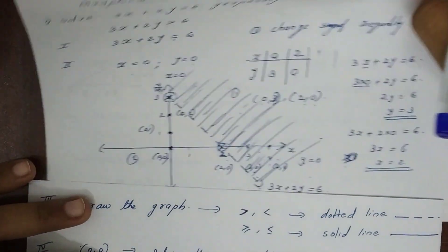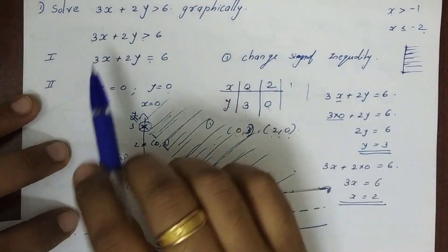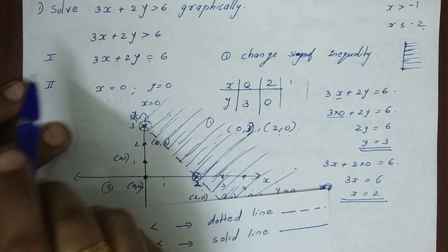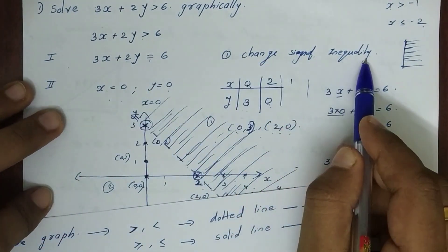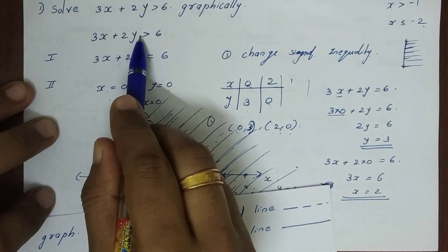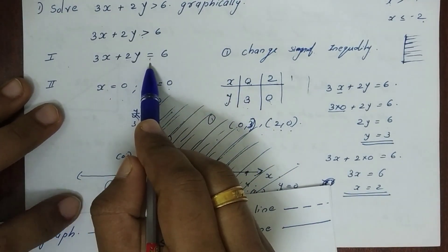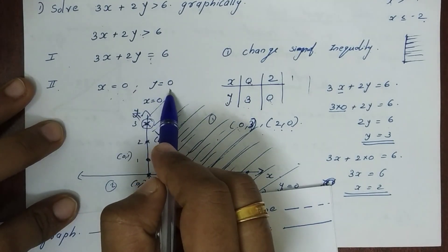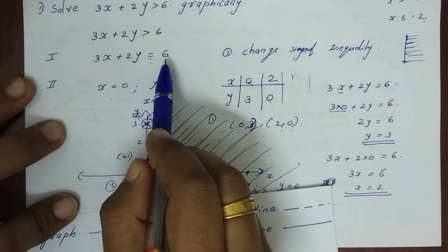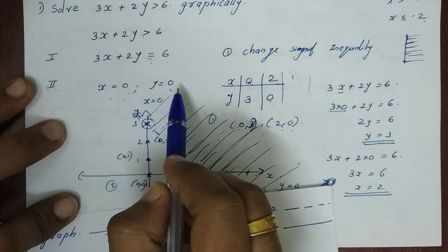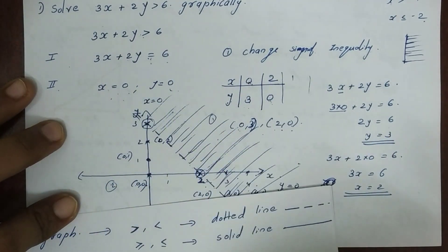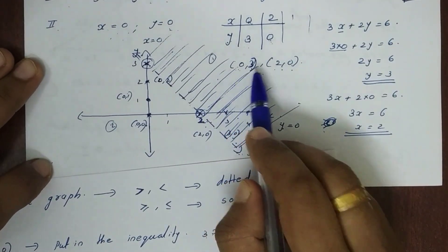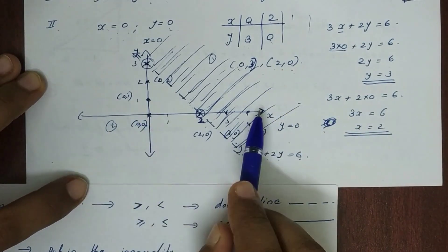To recap: the inequality is 3x plus 2y greater than 6. Step 1 is to change the inequality sign to an equal sign. Step 2 is to set x equal to 0 and y equal to 0 to get two coordinates: (0, 3) and (2, 0).